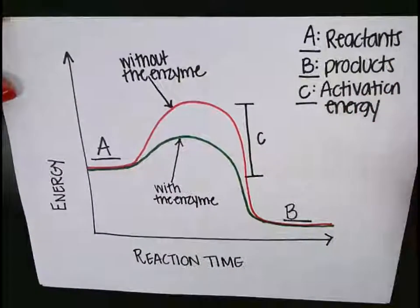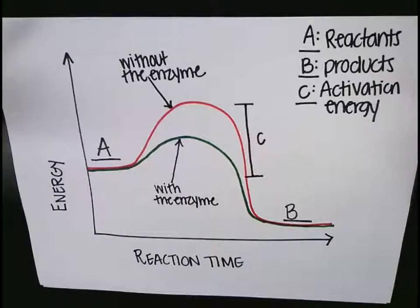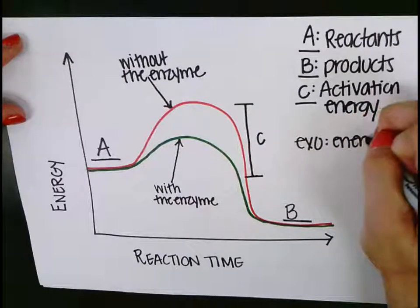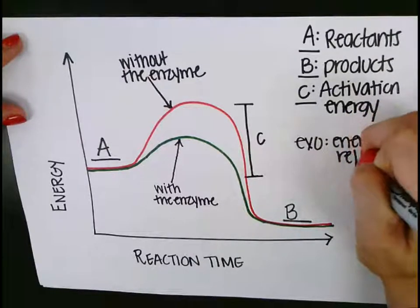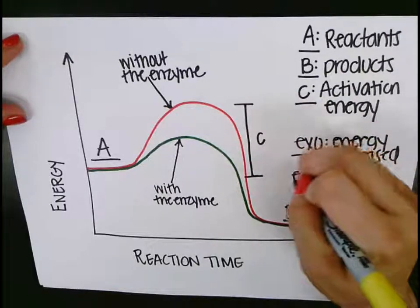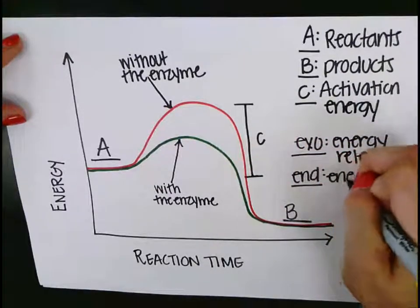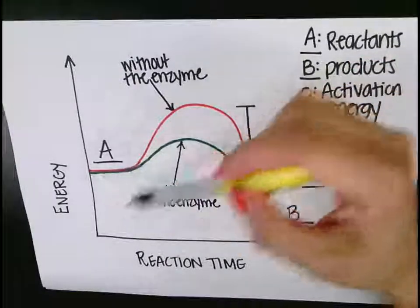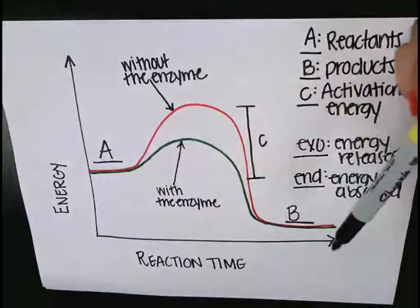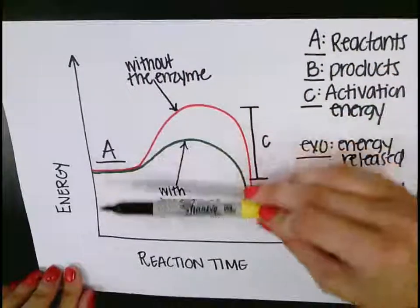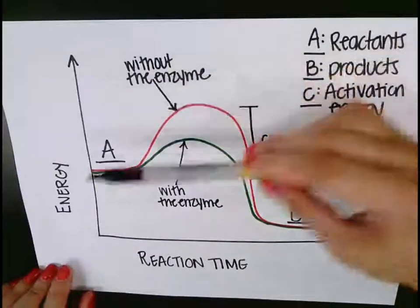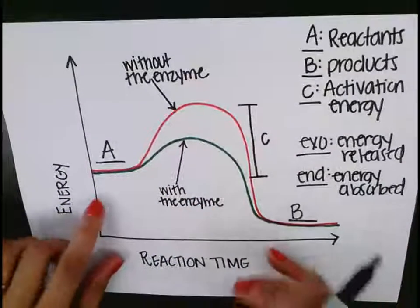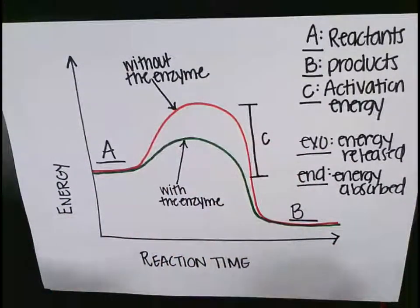The other thing I want to talk about with this graph is whether or not it is exothermic or endothermic. Exo means energy released, endothermic means energy absorbed or gained. So when we are looking at this graph, you can see that the reactants are higher than the products in terms of energy. So did it lose energy overall or did it gain energy overall? Well, we started here with this amount, we ended here with this amount. So there was energy lost. So therefore this reaction would be a great example of an exothermic reaction.